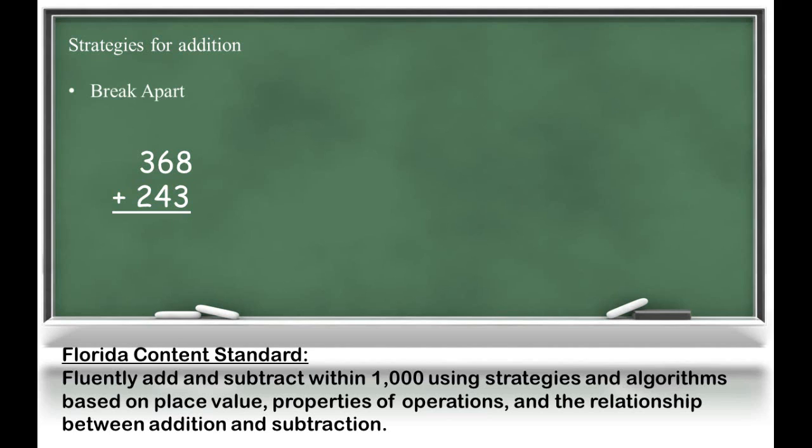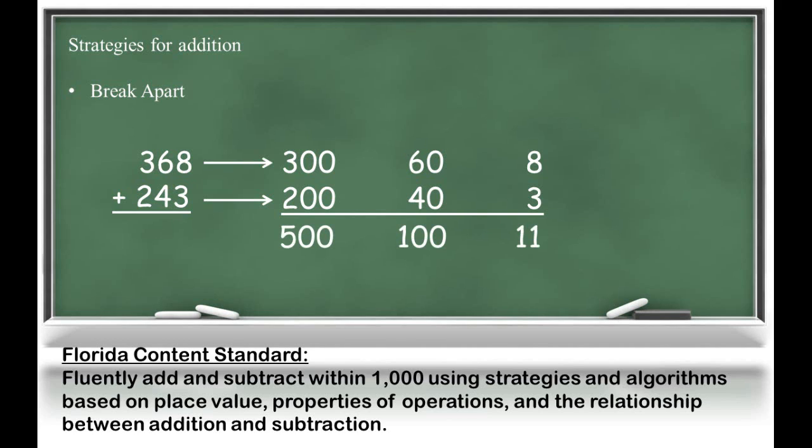For example, 368 can be broken apart to 300, 60, and 8. 243 can be broken up into 200, 40, and 3. Now I can add 300 plus 200 is 500, 60 plus 40 is 100, and 8 plus 3 is 11. Now I can add those partial sums together and get 611.